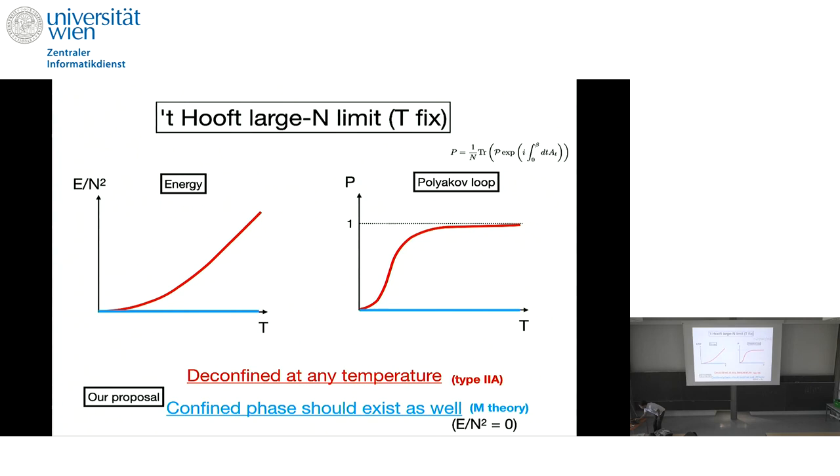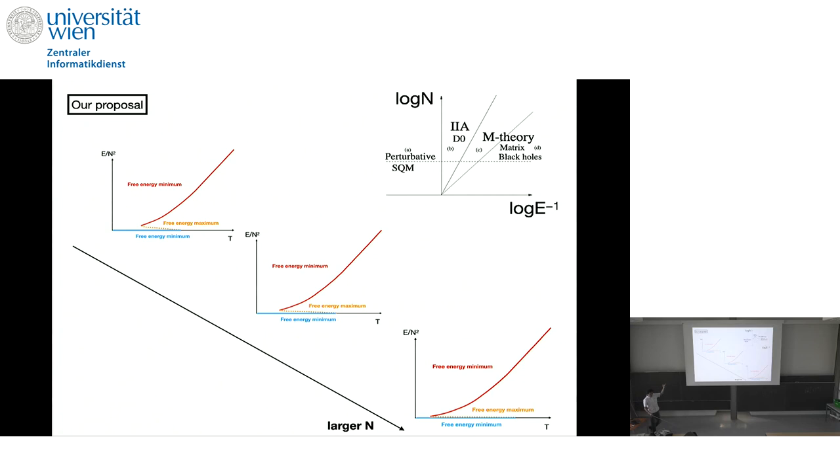And if we go to large, but finite n, we can connect it to what Itzhaki-Maldacena-Sonnenschein-Yankielowicz claim. So they say that if we go to very low energy, then 11th dimension opens up. And the black string in 11th dimension and the black hole in 11th dimension appears. And then gradually, black hole evaporates. It's a bit tricky because it's a black hole, 11th dimension black hole boosted along compact dimension. But if the effect of the boost is small, it's just an 11th dimension Schwarzschild black hole, which have negative specific heat. So temperature has to go up as energy goes up.